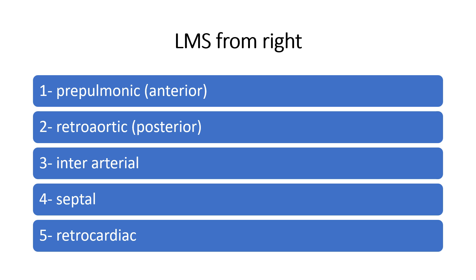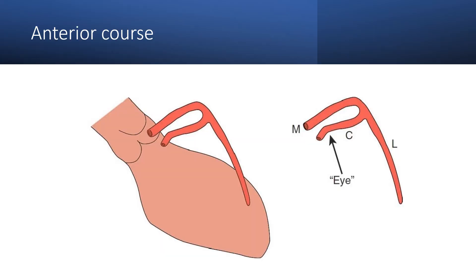Left main stem arising from the right is classified according to the course of the vessel into five types: the pre-pulmonic type (anterior course), the retro-aortic course (posterior), the inter-arterial course running between the pulmonary artery and the aorta, the septal course, and the retro-cardiac course. Nowadays, with CT angiography, it's easy to identify the course of the vessel, but by angiography we can have some hints based on what is called the eye sign seen in the aero-caudal view.